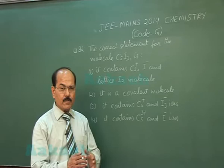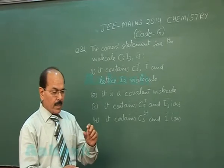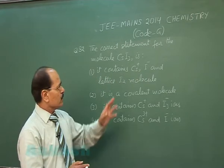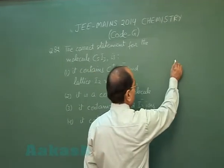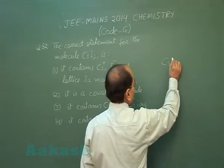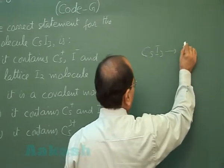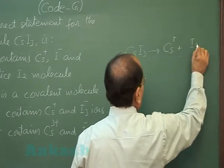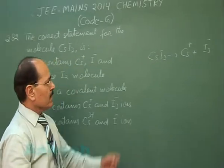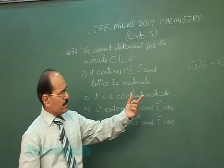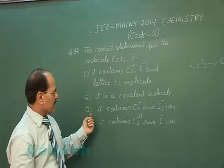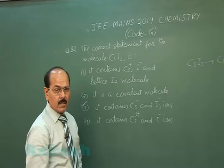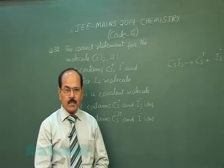Since halogens form interhalogen compounds, I- reacts with iodine to give I3-. So CSI3 is an ionic compound. It ionizes to give Cs+ and I3- ions. These are the ionic species obtained from CSI3. The correct answer is option three.